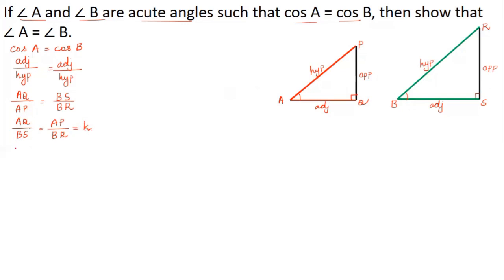Now AQ divided by BS is equal to AP divided by BR. Taking this as some constant K: AQ divided by BS equals K, and AP divided by BR equals K. This implies AQ is equal to K times BS.